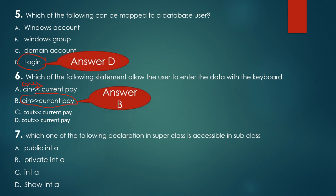Choose the following declaration in superclasses accessible in subclass. Public means all accessible. Public and private inside the classroom. Private is outside the classroom with restricted access. Field and protected are public.